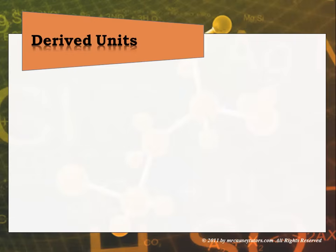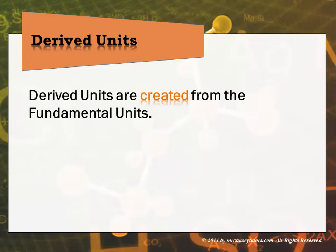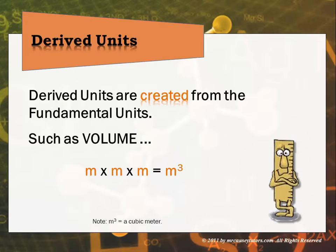All other units that come out of the SI system are considered derived units, and derived units are created from the fundamental units. For example, volume would be meter times meter times meter — length times width times height — which is the meter cubed. A cubic meter is actually quite large, more like a bathtub than something we would use in a chemistry lab for a beaker.